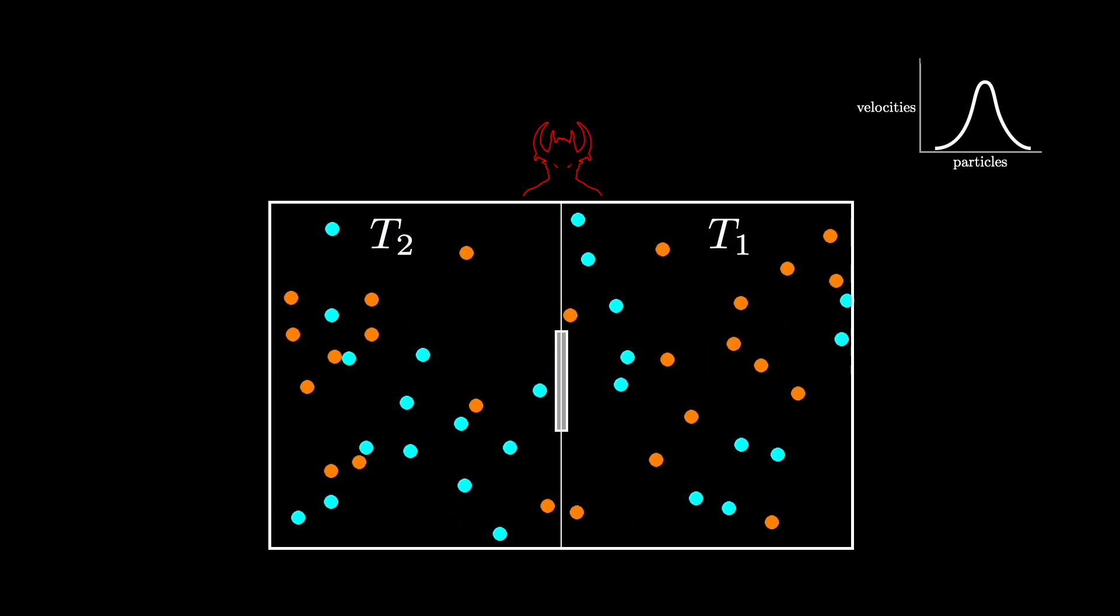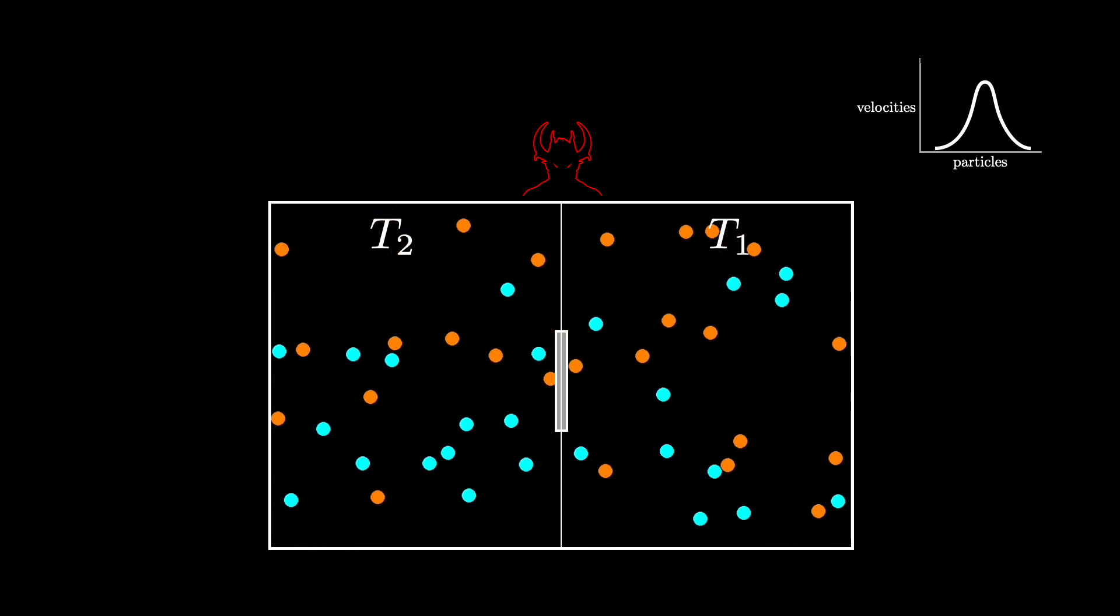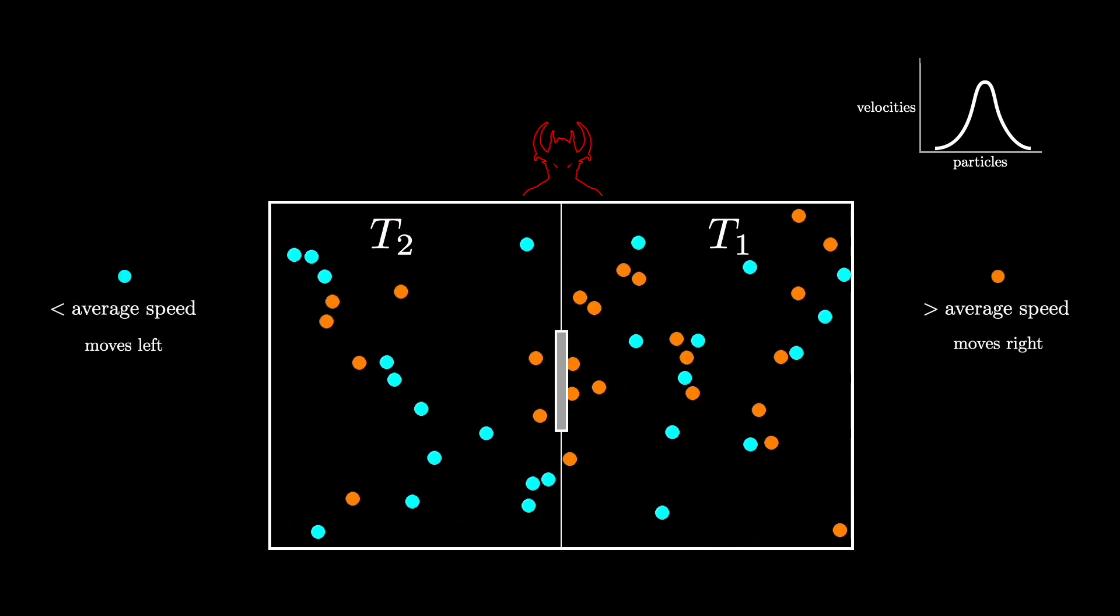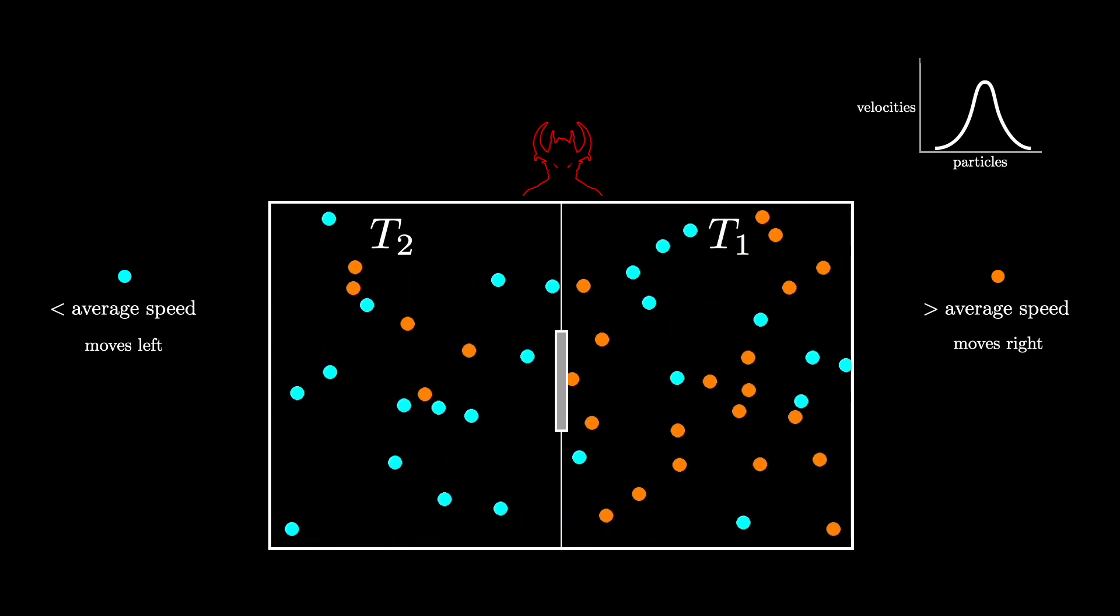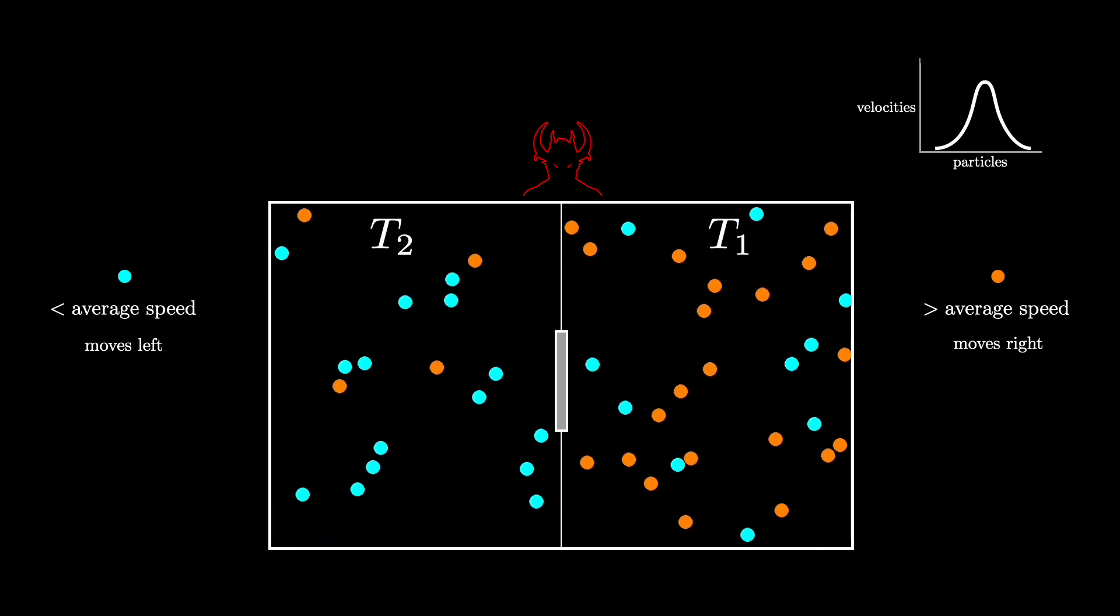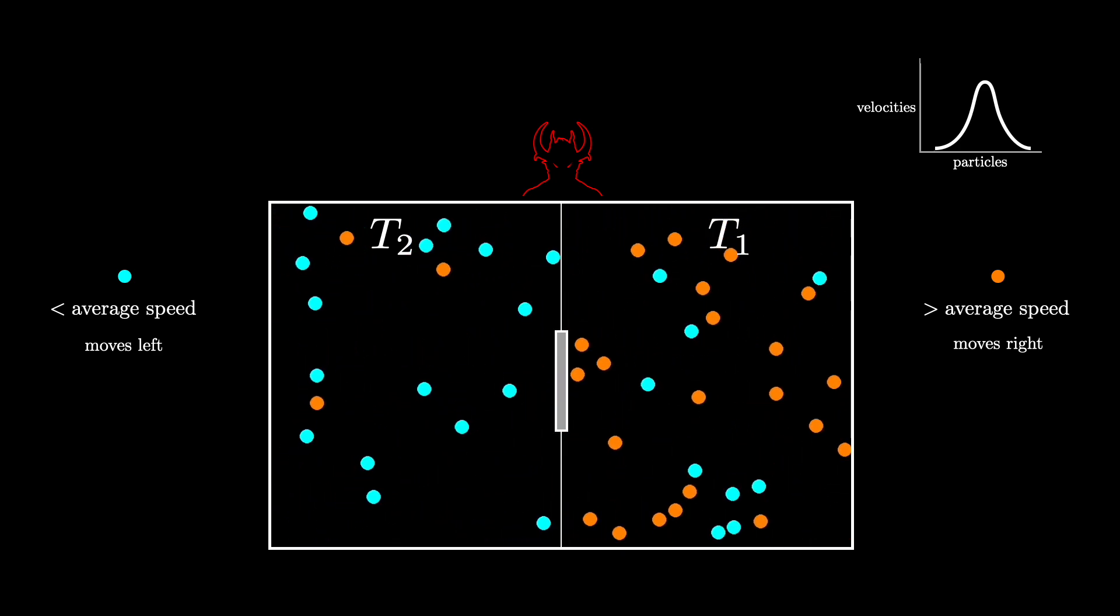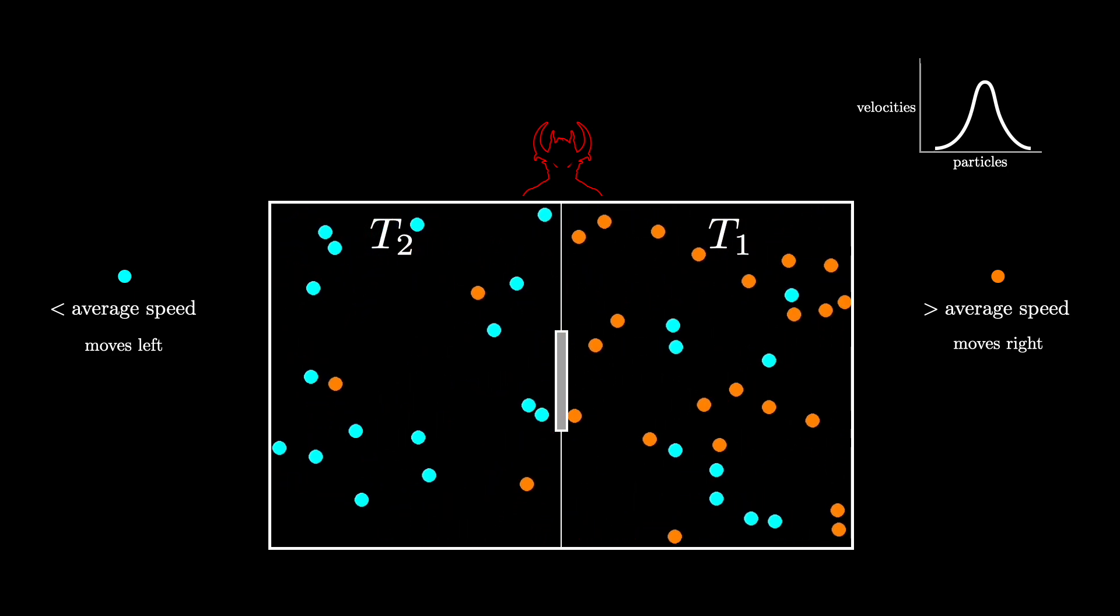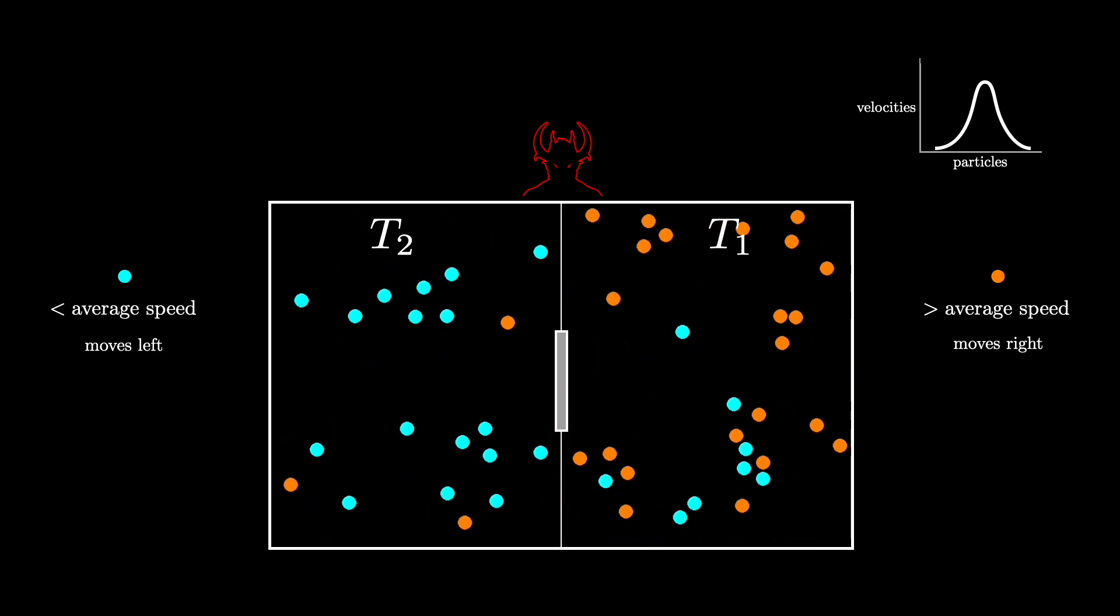Now enter Maxwell's demon. This hypothetical creature has the ability to open and close the door such that any molecule that has a speed greater than the average speed moves to the right half and any molecule that has a speed less than the average moves to the left. Eventually, the right half of the box will contain only fast molecules while the left only contains the slower ones. This means that there is a temperature difference between the two and the system is no longer in thermal equilibrium.